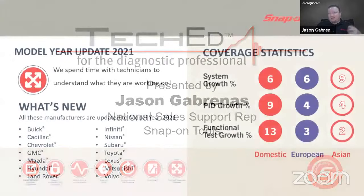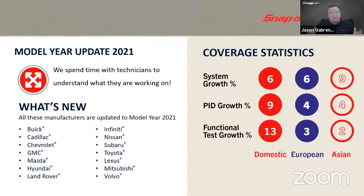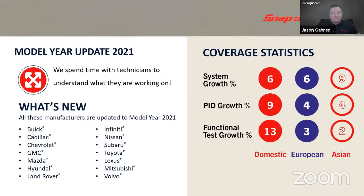Let's talk software. First, a high-level overview. We always update model years with each release, and we now have 14 different makes covered under 2021 vehicles, in addition to any added in the spring. Overall system growth: domestic 6%, European 6%, Asian 9% over the previous software. PID coverage growth is 9% and 4%, and functional test growth is 13% domestic, 3% European, 2% Asian. That's your high-level summary.